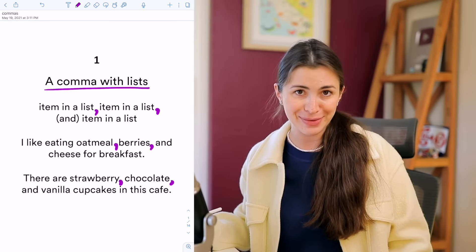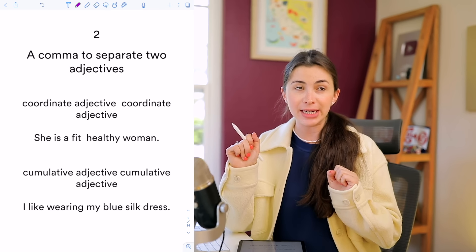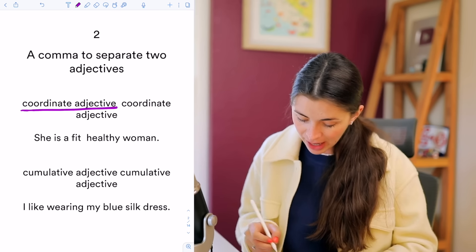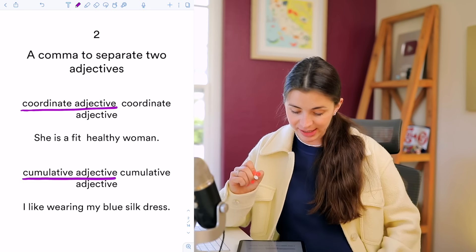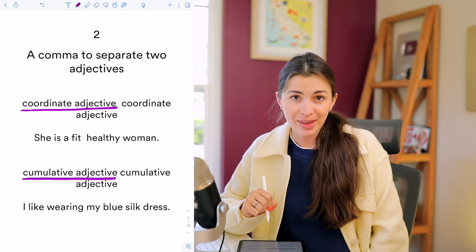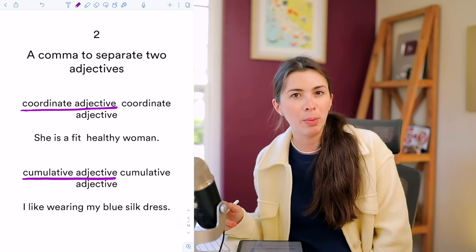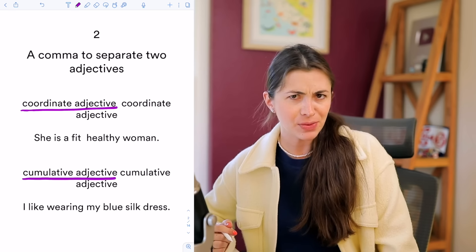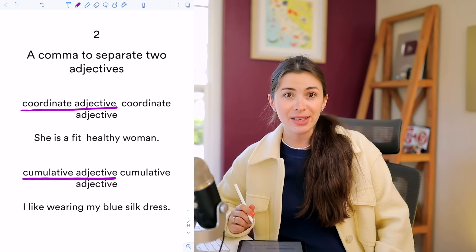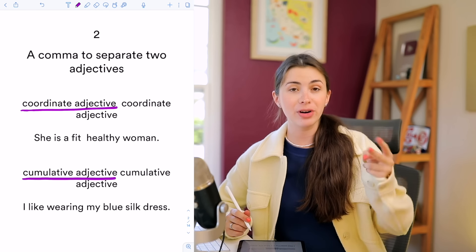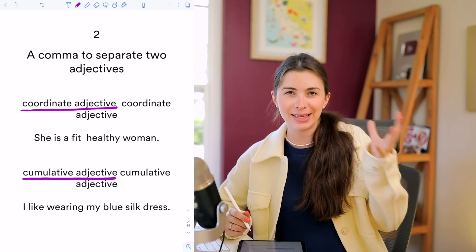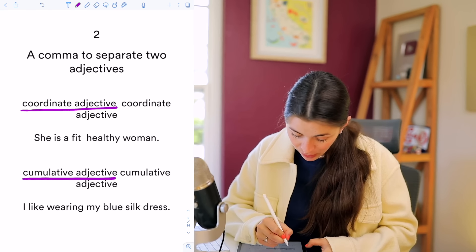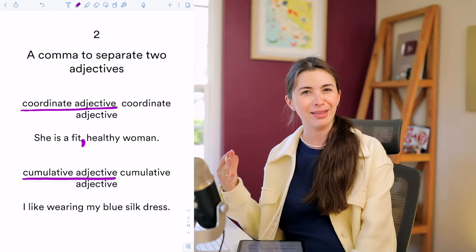There are two types of adjectives to understand. We have coordinate adjectives and cumulative adjectives. For coordinate adjectives, ask two questions: can you change their order, and can you put 'and' between them and still have the sentence make sense? Example: 'She is a fit, healthy woman.' Can you say 'she is a healthy, fit woman'? Yes. Can you say 'she is a healthy and fit woman'? Yes. If both work, they are coordinate adjectives and you need a comma between them.